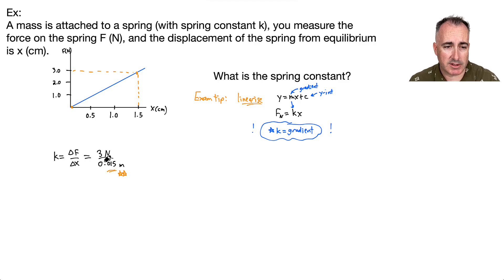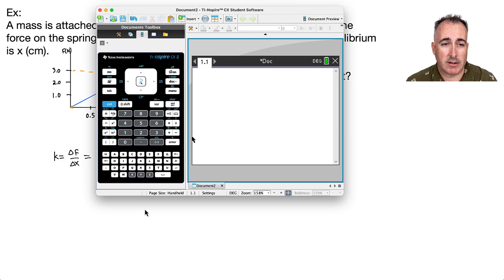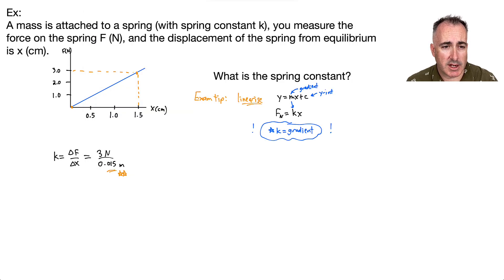So 0.015 is in meters. Then I do 3 divided by 0.015 on my calculator. So I just do a nice fraction here and say 3 over 0.015, and it's 200. So that's my answer, it's equal to 200. Now what are the units? It's going to be newtons per meter. So K equals 200 newtons per meter, and away I go.